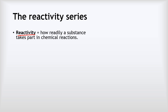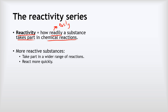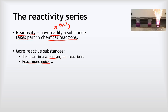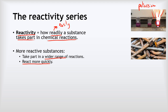Let's look at something new: the reactivity series. Reactivity tells us how readily a substance takes part in chemical reactions — more reactive substances take part in a wider range of reactions and tend to react more quickly. Potassium is a very reactive metal; when dropped in water it bursts into purple flame and spits out sparks. Iron dropped in water will react, but it just slowly rusts over months or years — much, much slower.